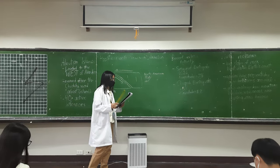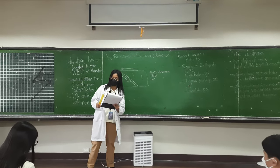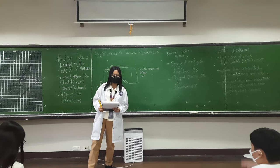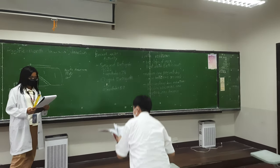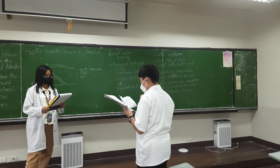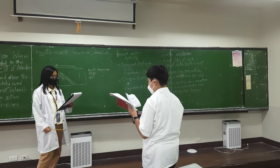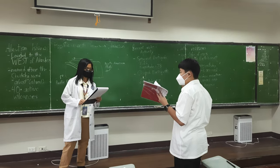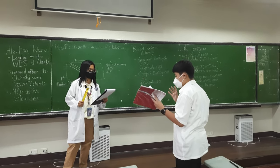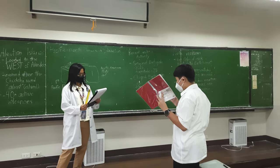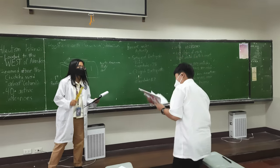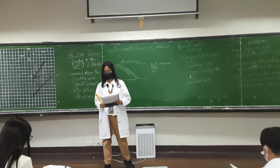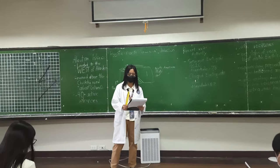One example of a tsunami that affected the Aleutian Islands was in 1946. The tsunami generated waves of around 14 meters that reached as far as Hawaii. Sadly, these events took the lives of 165 people.